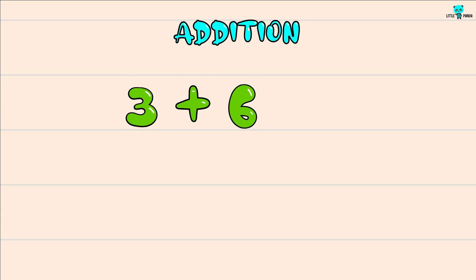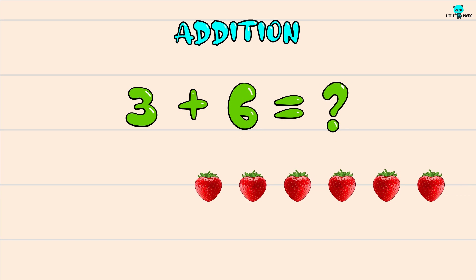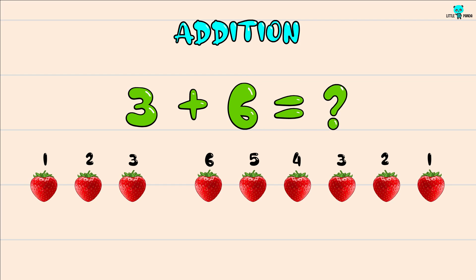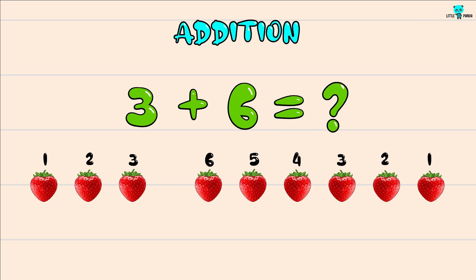Solve this addition problem. We are taking strawberries for example. We have to take a greater number first and add the lesser number. So here the greater number is 6 plus 3 more.